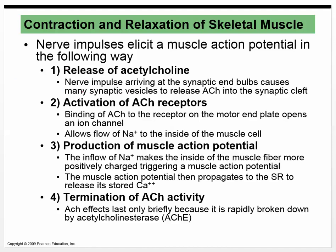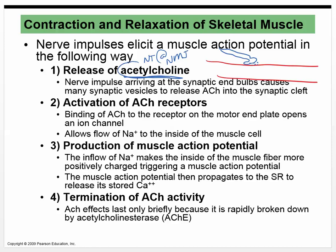Let's try to put it all in one big order. Here's our muscle, and coming down to it is a motor neuron. This motor neuron releases acetylcholine — acetylcholine is the neurotransmitter at the neuromuscular junction, NMJ. The neurotransmitter at the neuromuscular junction is acetylcholine.